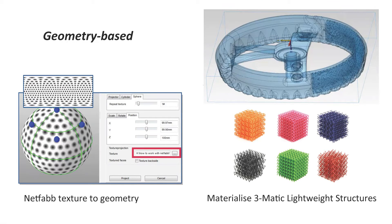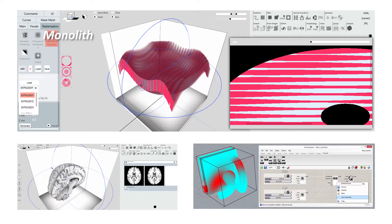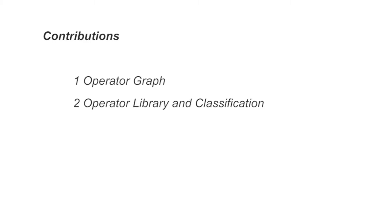Tools such as NetFab and Materialized 3Matic tackle the problem of low-level geometric features. While they provide ways to generate lattices or surface textures, they are limited to modifying geometry and don't support hierarchical design. New voxel-based modeling tools are appearing, such as Monolith, that provides greater flexibility for freeform design. With Foundry, our contributions include first an operator graph formulation for multi-material specification.